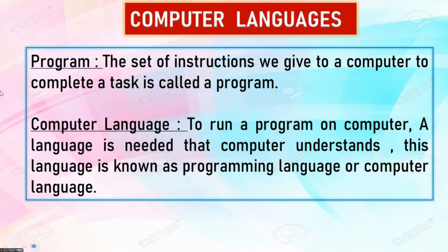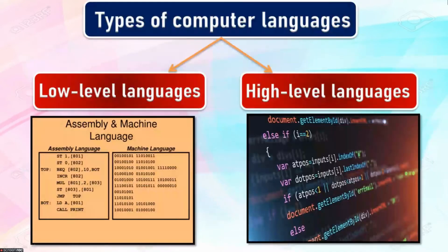Types of computer languages: there are two types of computer languages — low level languages and high level languages. Let's now look at the differences between these two languages.